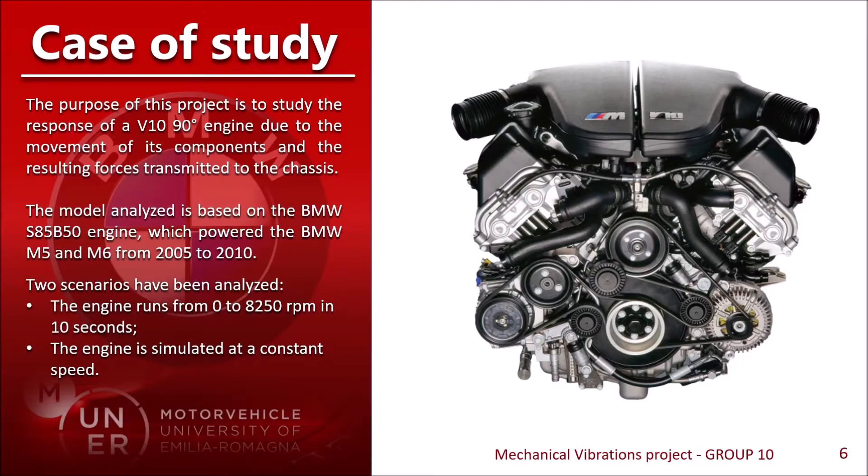We decided to base our study on a BMW engine, the engine that powered the M5 and M6 car models. We have two main types of simulation: a speed ramp from 0 to 8250 rpm and a simulation at constant speed.